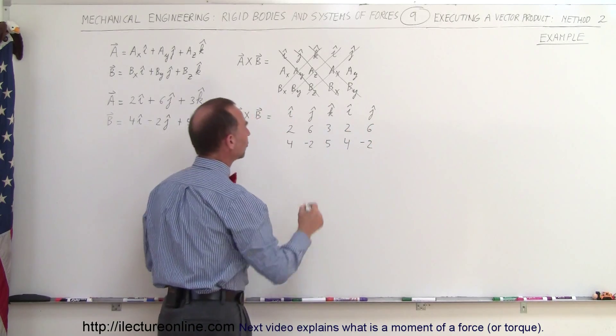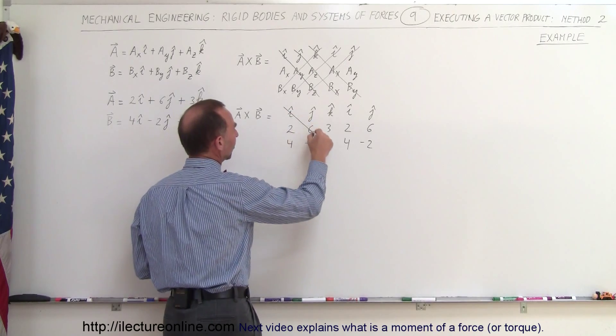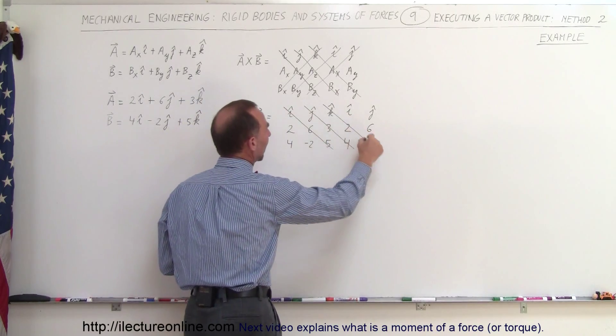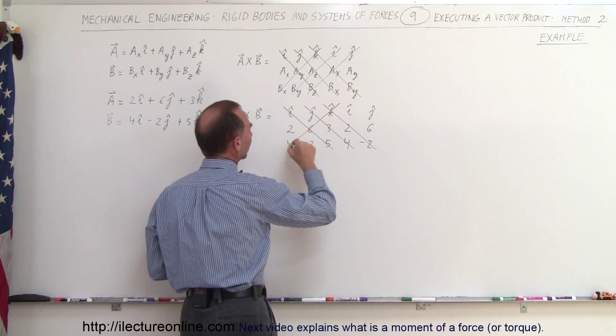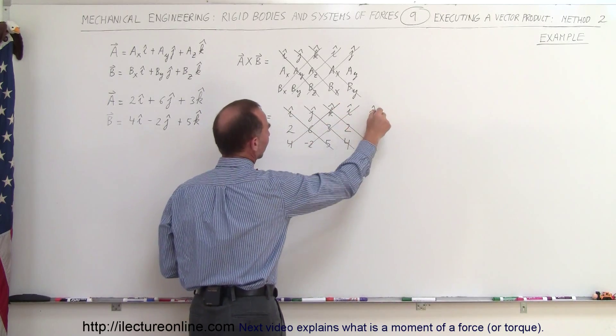So what you're going to do now is you're going to draw lines across like this so it's easy to follow. So those three diagonals and then you draw lines in the opposite direction starting with the K unit vector like that.